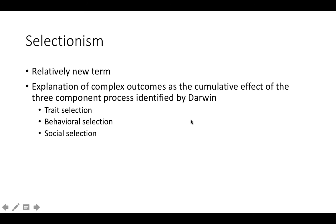Selectionism is a relatively new term. I first ran into it in a paper by John Donahoe, one of the textbook authors, who wrote a paper in the 90s called 'Selectionism and Essentialism in Behavioral Science.' The word is relatively new, but it's defined as an explanation of complex outcomes as the cumulative effect of the three-component process identified by Darwin. The implication is that it expands our understanding of evolution to new circumstances.